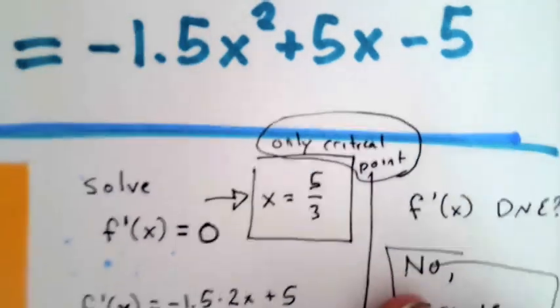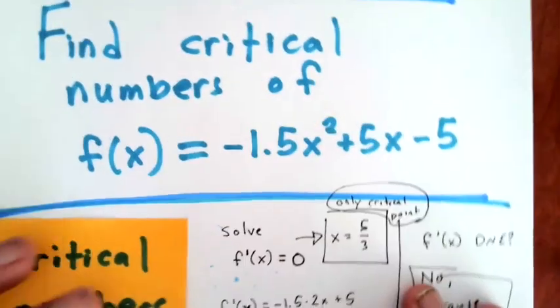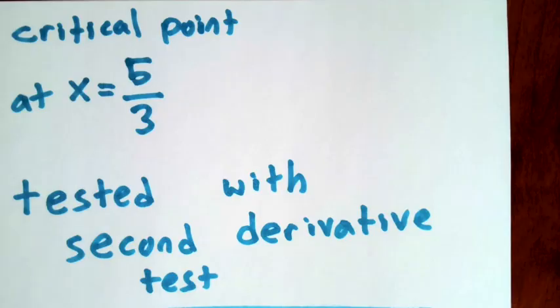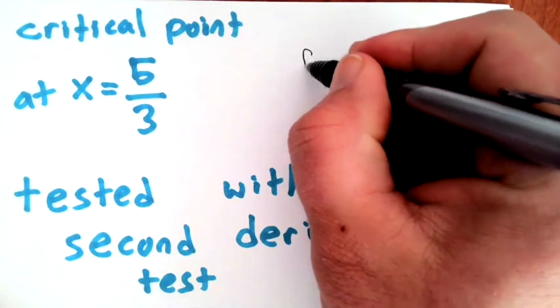It also asks me to use the second derivative test to determine whether this is a local max or local min. So the critical point at x = 5/3 is tested with the second derivative test.